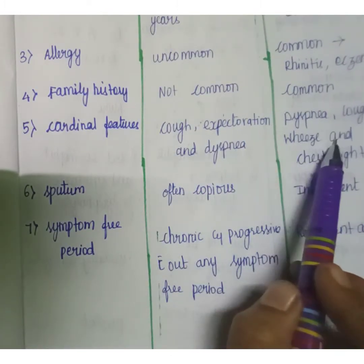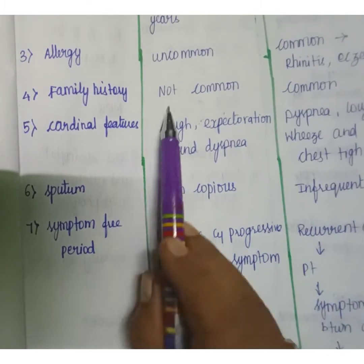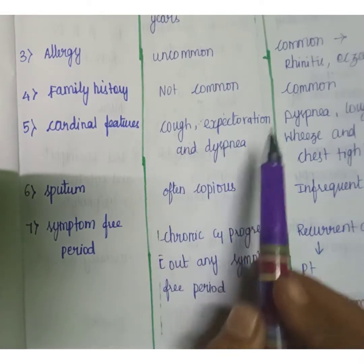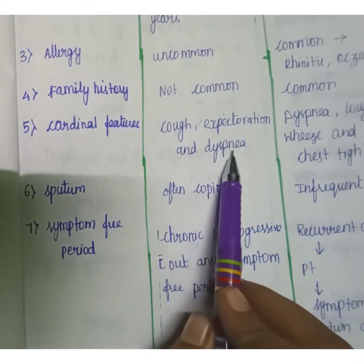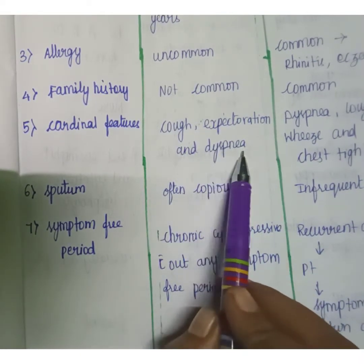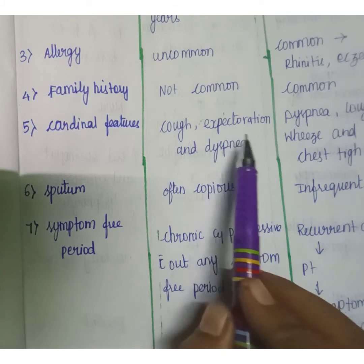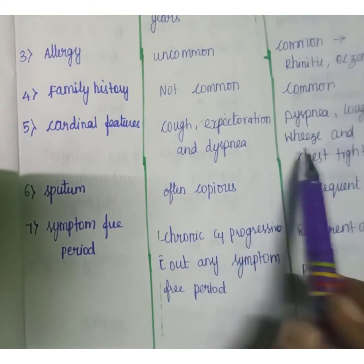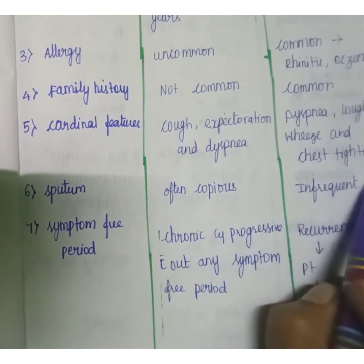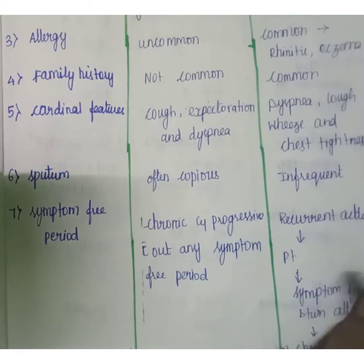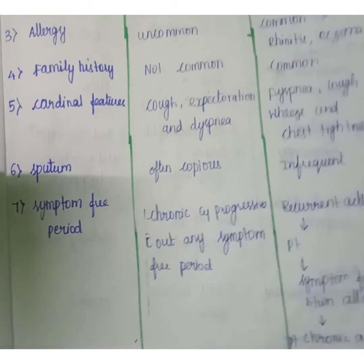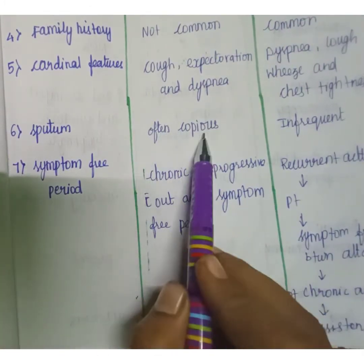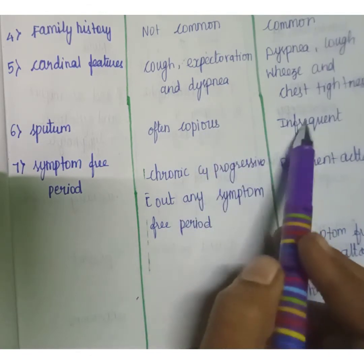The cardinal features of COPD are cough, expectoration, and dyspnea — dyspnea meaning shortness of breath. In asthma, the cardinal features include dyspnea, cough, and the patient may feel chest tightness.